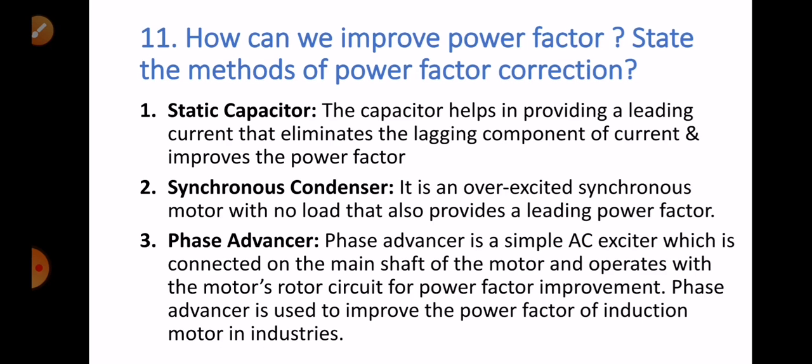Question number eleven: how can we improve power factor? We can improve power factor by three methods. First, static capacitors — the capacitor provides a leading current that eliminates the lagging components and improves the power factor. Second, synchronous condenser — an overexcited synchronous motor with no load that also provides a leading power factor. Third, phase advancer — a simple AC exciter connected on the main shaft of the motor that operates with the motor's rotor circuit for power factor improvement, especially used in induction motors in industries.